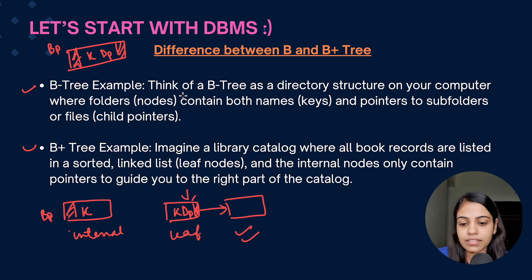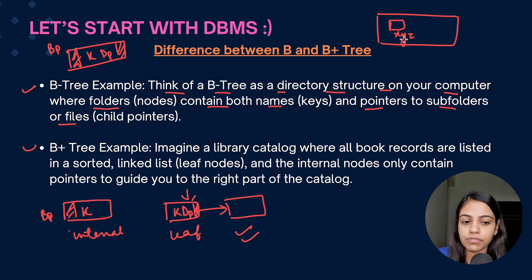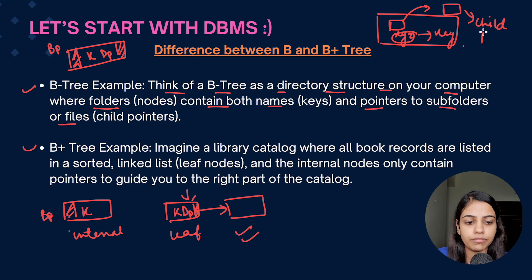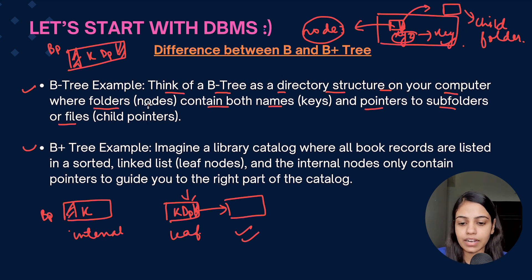Think of a B-tree as a directory structure on your computer where folders contain both a name and pointers to subfolders or files. A folder has a name which is the key, and inside that folder there is a child folder, so the node contains the key as well as the block pointer pointing to the child. So each node contains keys and pointers to subfolders or child folders.